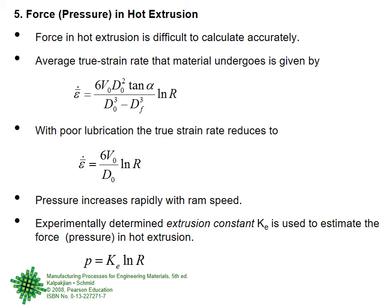Compared to cold extrusion, friction in hot extrusion is generally lower because the material is softer at high temperature, which reduces friction. On the other hand, at high temperatures, oxidation can form new material layers on the surfaces, which can increase friction. So friction in hot extrusion should be low if no new chemical material forms, but oxidation at high temperature is a complicating factor.